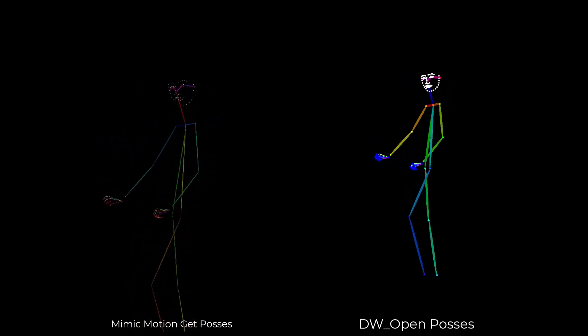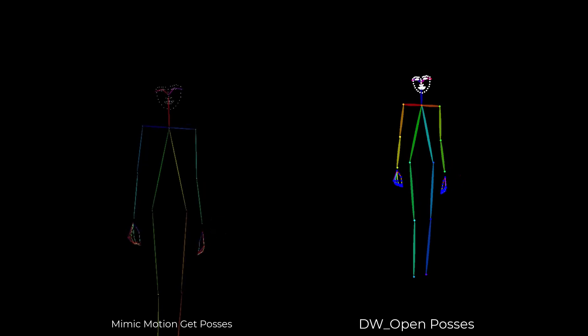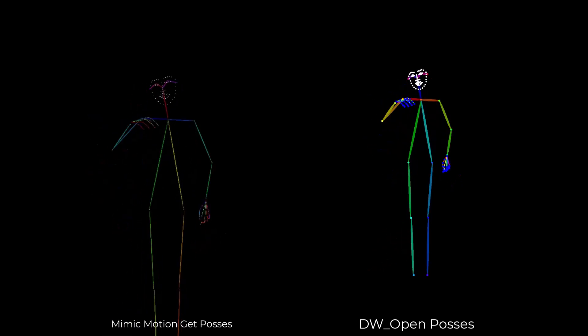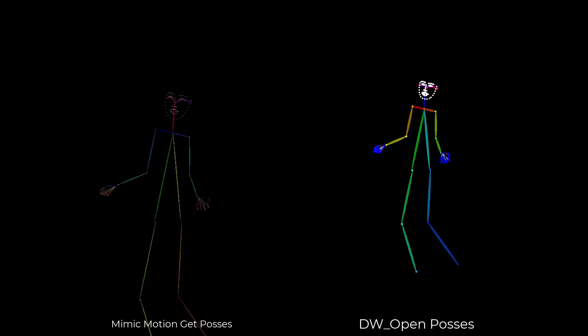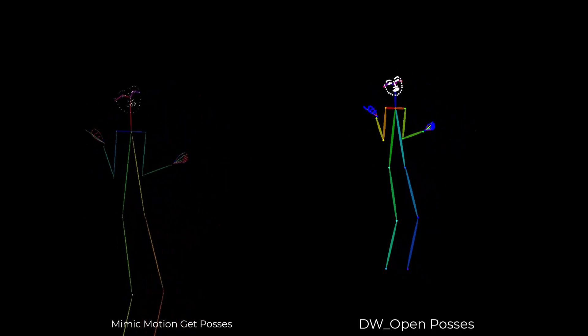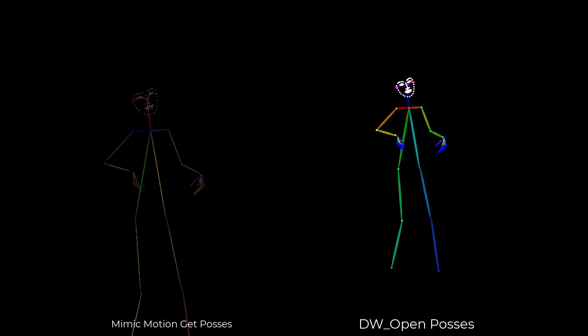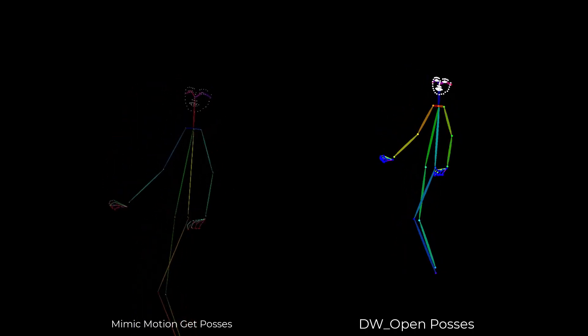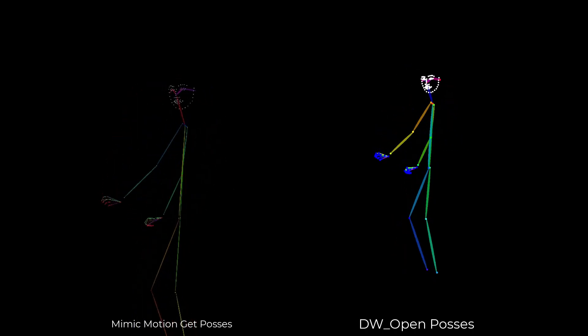So even though the wireframe is full body, it's still in a half body position. DW Open Pose, on the other hand, ignored the source image's pose and created a full body wireframe based only on the source video.